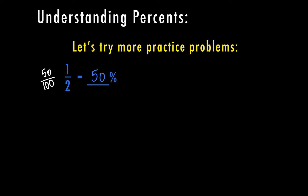Does this mean only one out of two people want a cookie? Yes, but that means out of the total number of people. So if there were five hundred people, two hundred and fifty of them would want a cookie, because that's half of five hundred. Anytime we're talking about fifty percent, that's representing how many people out of one hundred, even if there are thousands of people.